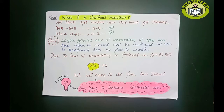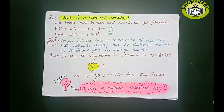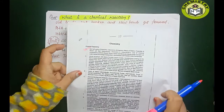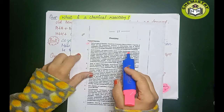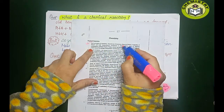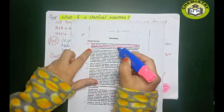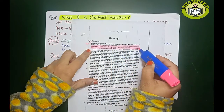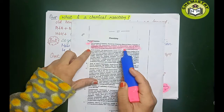Hello everyone, welcome to HM Chemistry channel. Today's video is chapter number one from Stoichiometry and Stoichiometric calculations, and Dalton's Atomic Theory. First of all, have a look at what we've covered: laws of chemical combination, Dalton's atomic theory, atomic and molecular mass, mole concept, empirical formula, percentage, and stoichiometric calculations — the whole part is done.